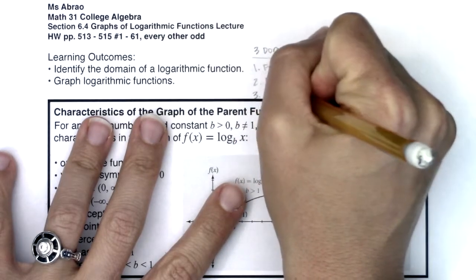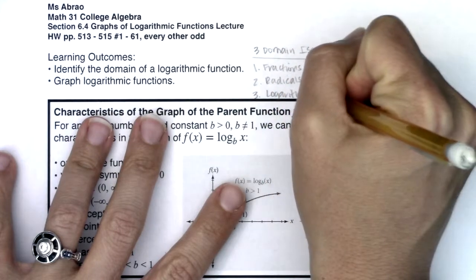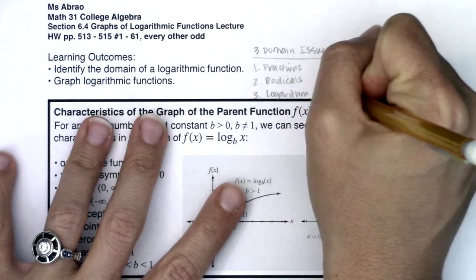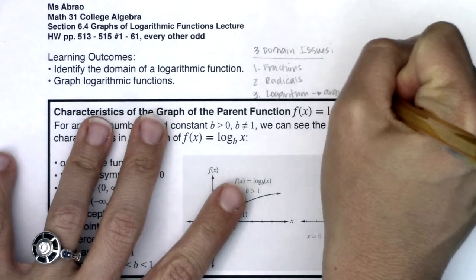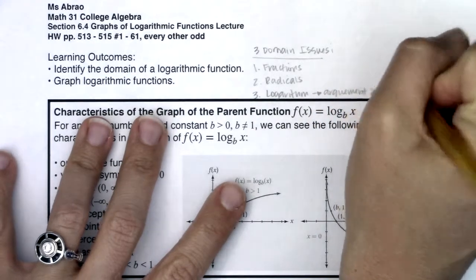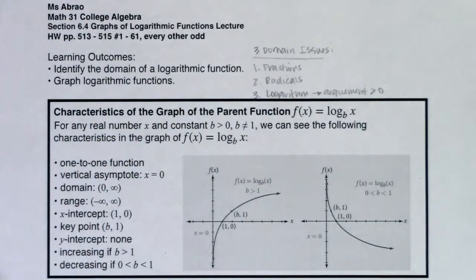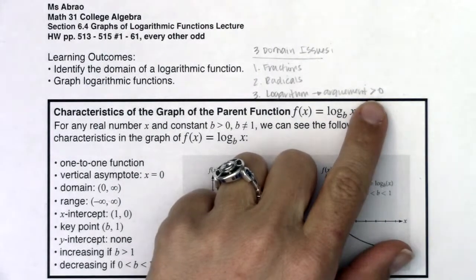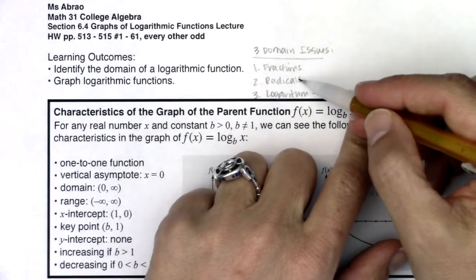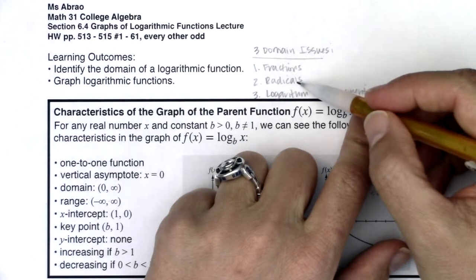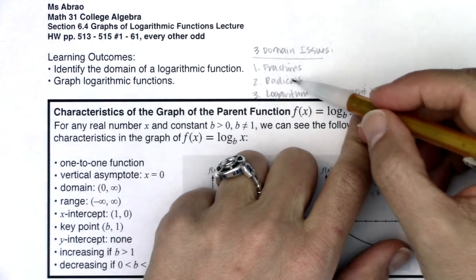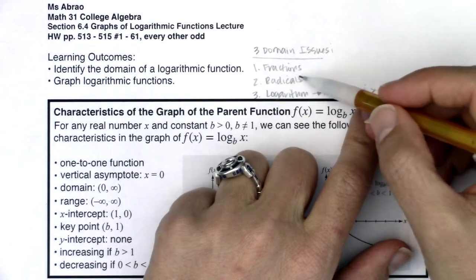And we're finally getting to our third domain issue, which is a logarithm. You're going to hear me repeat in this section that the argument must be positive — it has to be greater than zero. It cannot be equal to zero and it cannot be negative, so it's got to be strictly greater than zero. That's slightly different than the domain issue with radicals, where your radicand has to be greater than or equal to zero.